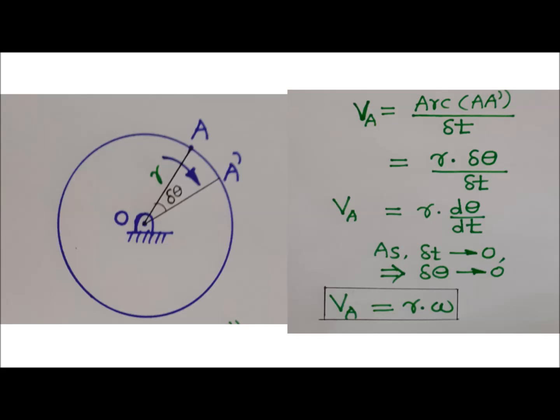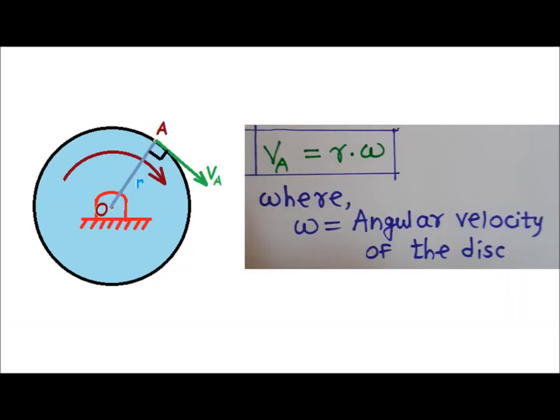And d theta upon dt will equal omega, that is angular velocity of the disk, because angular velocity is rate of change of angular displacement with respect to time. For VA, we will have the relation VA equals R omega. Hence velocity at point A is given by VA equals R omega, or we can say VA equals OA into omega.